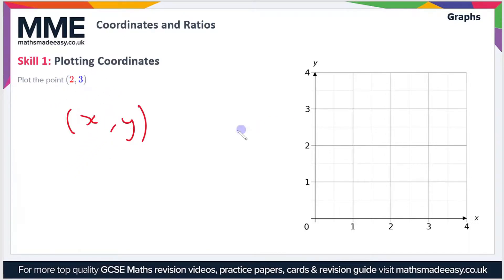In this case, (2, 3), the x value is 2 and the y value is 3. So we go to 2 on the x-axis and we go up to 3 on the y-axis, so the coordinate is there.